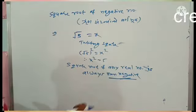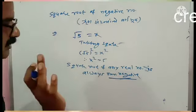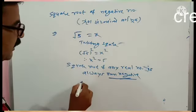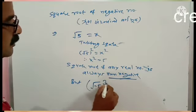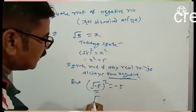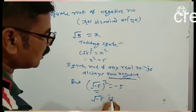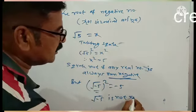But if we consider the square root of minus 5, we find that (√-5)² equals -5. However, √-5 is not a real number.